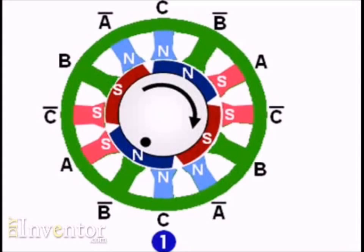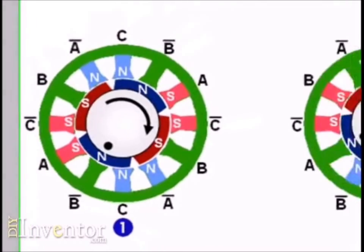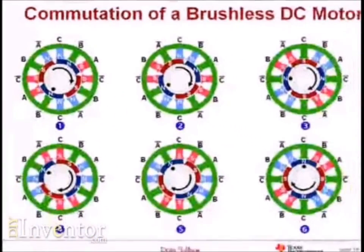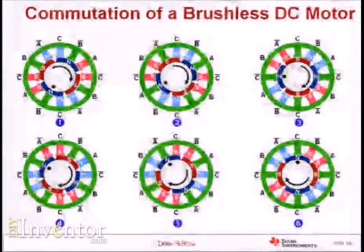The motor starts to move and this south pole begins moving toward its happy state — when it is under both north poles of the stator. But before it can get there, the Hall effect sensors detect that we've crossed into another commutation zone. That information tells me to turn off phase A and turn on phase B. Looking at the new magnetic pattern on the stator, it effectively advances the magnetic pattern by 30 degrees, so the rotor has even farther to travel to reach its new happy state, and the process continues on and on.